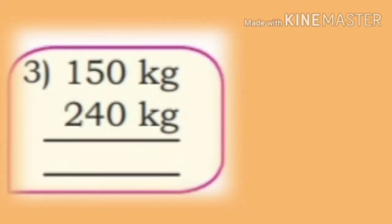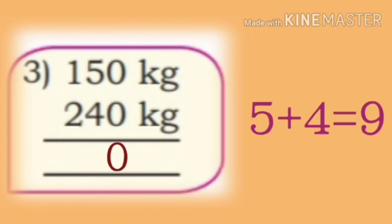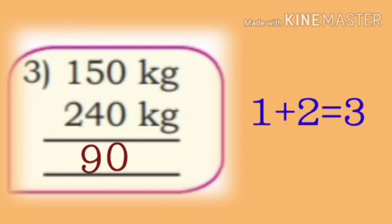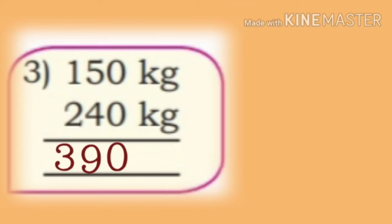Third one: 150 kg plus 240 kg. Add units place: 0 plus 0 is 0. Add tens place: 5 plus 4 is 9 — write in tens place. Add hundreds: 1 plus 2 is 3. So the answer is 390 kg.